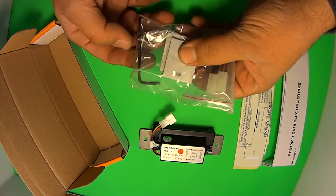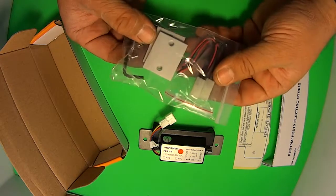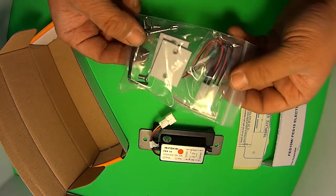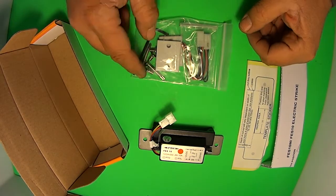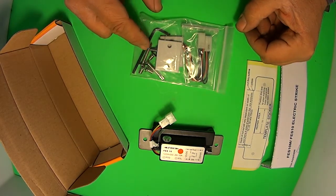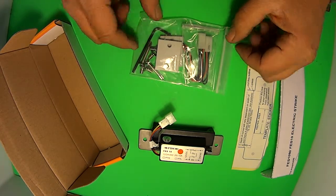It also comes with some mounts, some allen keys, a couple of self tappers as well. So you can fit it into aluminum or wood or whichever you prefer. You've got the four metal countersunk screws and the two large self drilling wood threaded screws with the allen key.